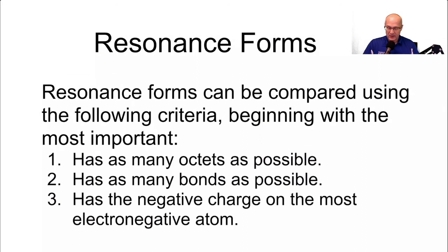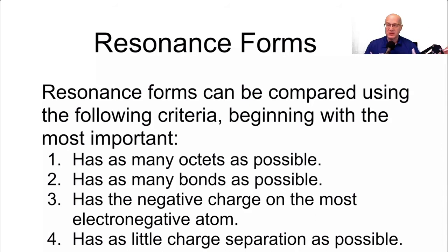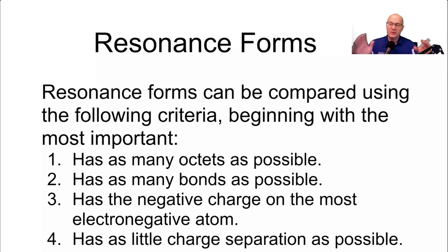Here are the top four things you look at when weighting resonance forms, because most resonance forms are not created equal. If you have an ion or molecule with, say, 20 resonance forms — which is very possible — not every resonance form you draw is going to be equal to the others. In fact, they're all likely going to have different weights.